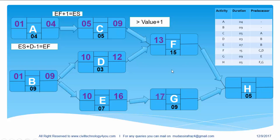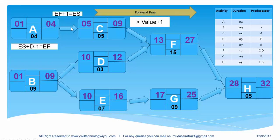So what will be the early start of this activity? It is 17 — 16 plus 1 makes 17. The early finish of these activities will be 27 and 25. What will be the early start of the next activity? We take the greater value and add 1, so it is 28. The early finish of this activity will be 32. The process we did here, where we defined the early start and early finish of all activities, is called the forward pass.